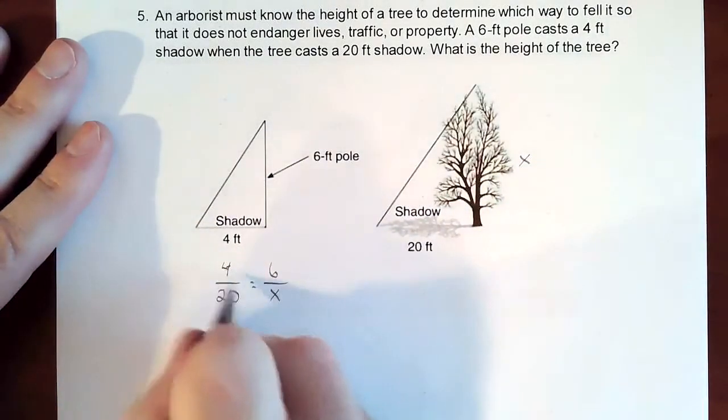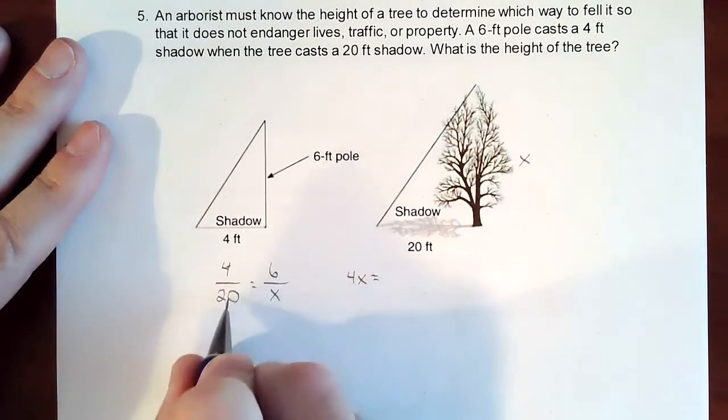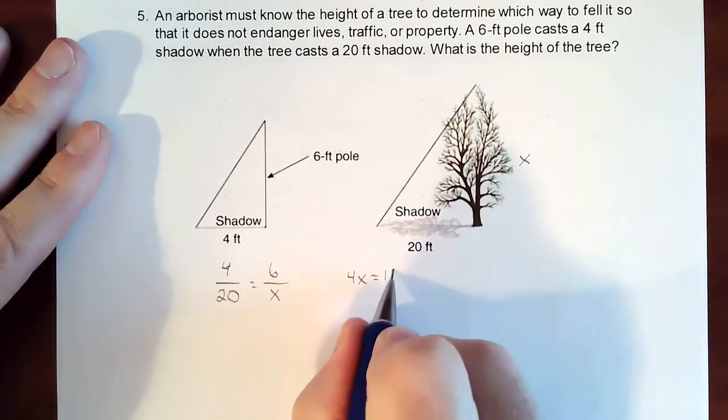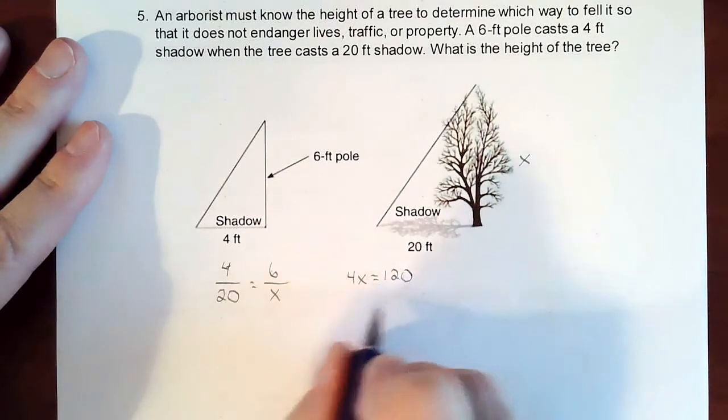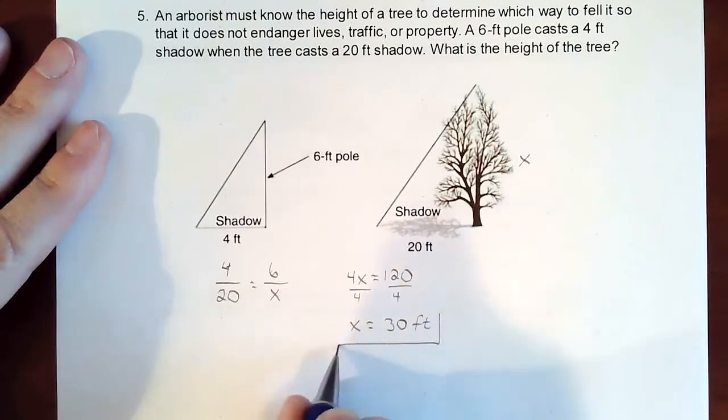Then we cross multiply. We'll have 4X equals 6 times 20, which is 120. Divide by 4, X equals 30. So the height of that tree is going to be 30 feet.